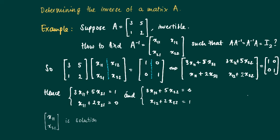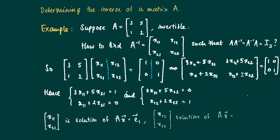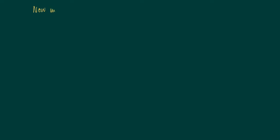We are looking for x11, x21 such that A times [x11, x21] equals e1 = [1, 0] — that is the first column of the inverse matrix. And x12, x22 — the second column of the inverse matrix — should be the solution of A x = e2 = [0, 1]. This one procedure works in general for 3×3, 4×4, and other matrix dimensions.